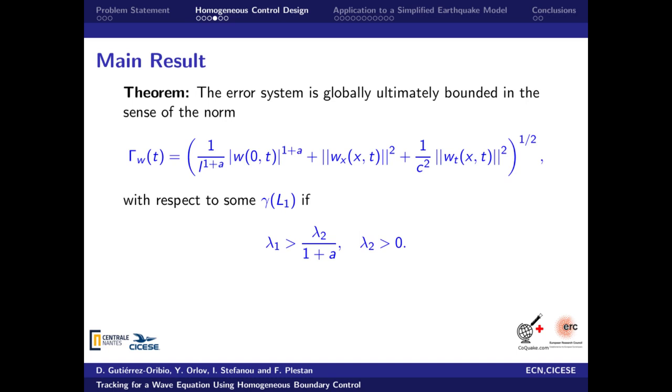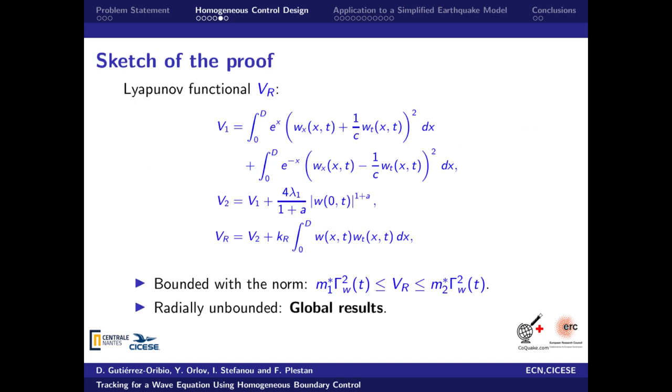Therefore, the gain design depends only on the selection of the homogeneous parameter A. In order to prove this, we choose an appropriate Lyapunov functional that can be bounded with the selected norm. Even more, it is radially unbounded. This later property allows to obtain global results.